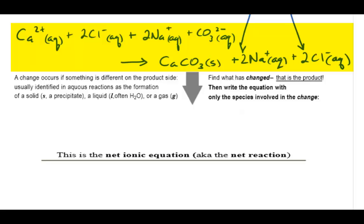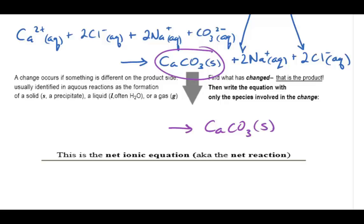Now let's look at what has actually changed in the reaction. We can see that solid calcium carbonate has precipitated, so that is the product. What does it take to produce solid calcium carbonate from solution? It takes aqueous calcium ions and aqueous carbonate ions.